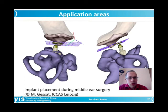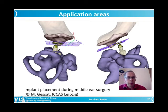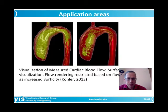A TORP implant — total ossicular replacement implant — needs to be placed at the right position in the middle ear to connect structures so that sound can be propagated as in a healthy patient. Image analysis is quite important here: we need to precisely know about the structures in the middle ear before deciding which implant fits well and how it needs to be specifically placed.